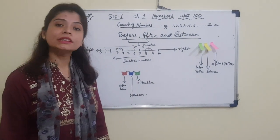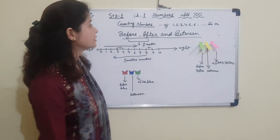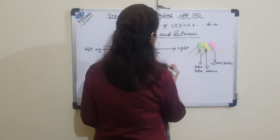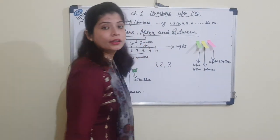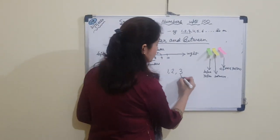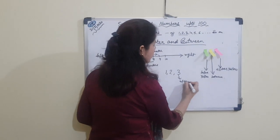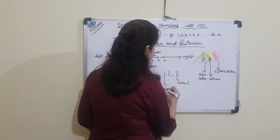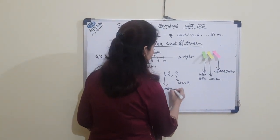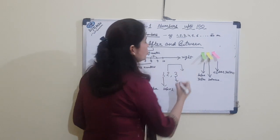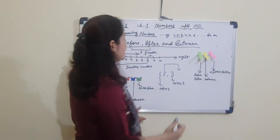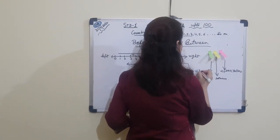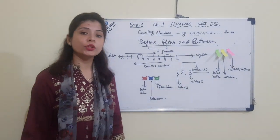Now let us take the example of the first three counting numbers: 1, 2 and 3. Three comes after two. One comes before two. And two lies in between one and three.